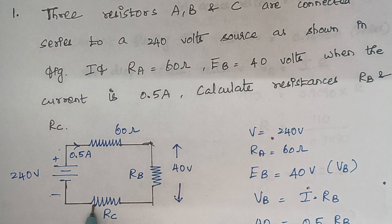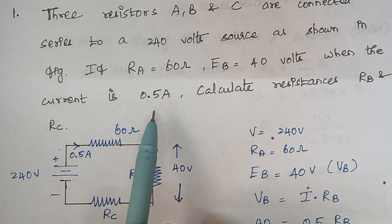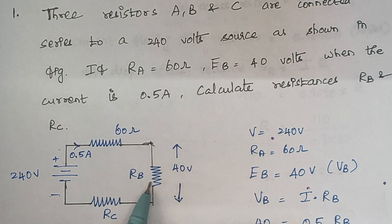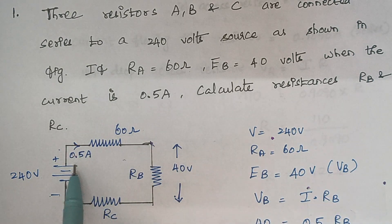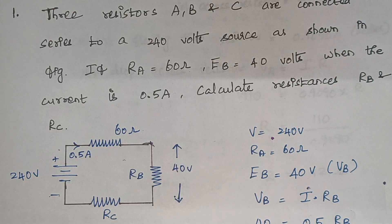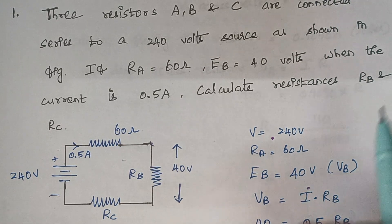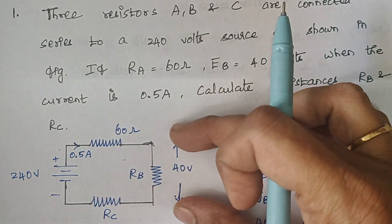These three resistors are connected in series to a 240 volt voltage source. The available parameters are: RA is 60 ohms, and the current flowing through the circuit is 0.5 amps. The voltage drop across resistor RB is given as 40 volts. We are asked to calculate the values of RB and RC.